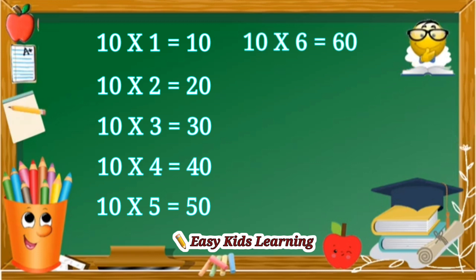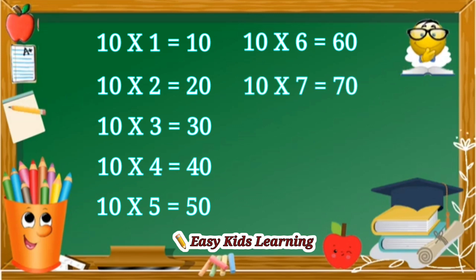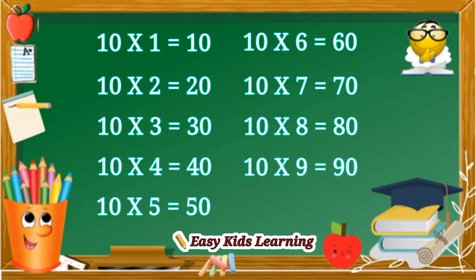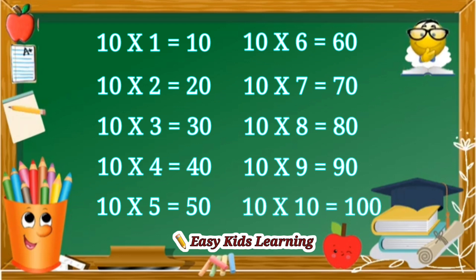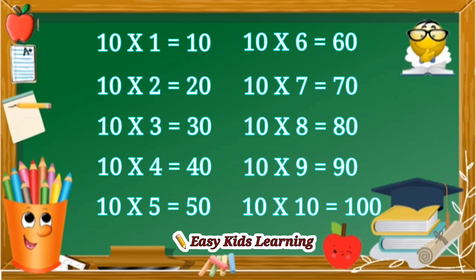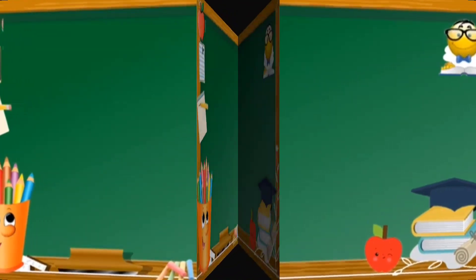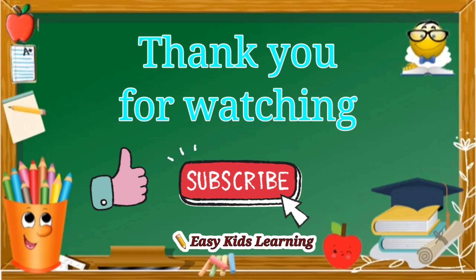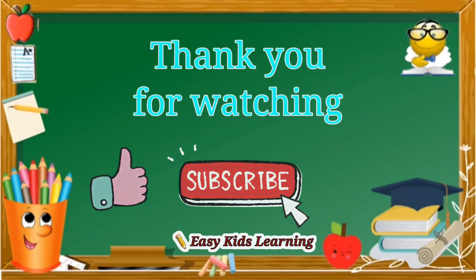Ten sixes are sixty. Ten sevens are seventy. Ten eights are eighty. Ten nines are ninety. Ten tens are one hundred.